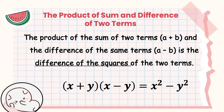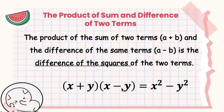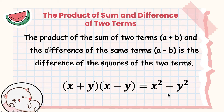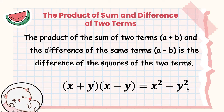As we multiply (x + y)(x − y), the first expression is a sum and the second expression is a difference. The product of the sum and difference of two terms will be the difference of the squares: the square of the first term x, which is x², minus the square of the second term y, which is y².